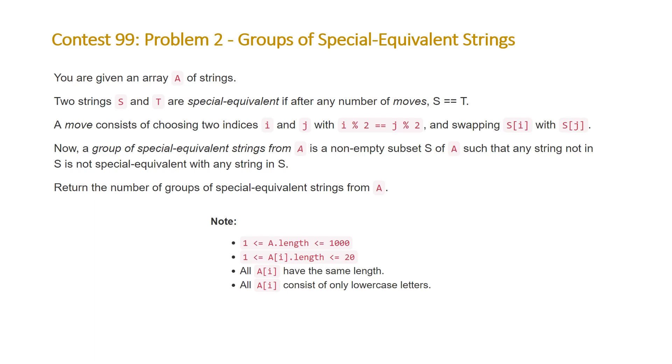The problem states you are given an array A of strings. Two strings S and T are special equivalent if after any number of moves S equals T. A move consists of choosing two indices i and j with i modulus 2 being equal to j modulus 2 and swapping the characters at S[i] and S[j].